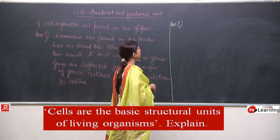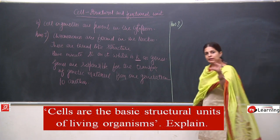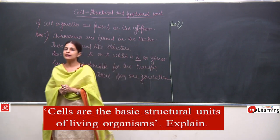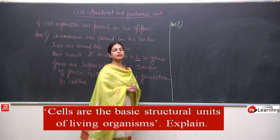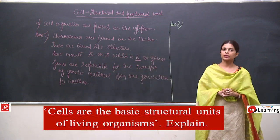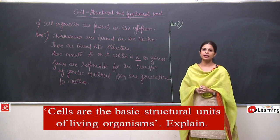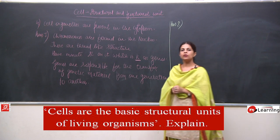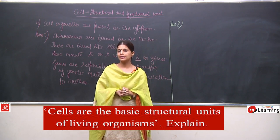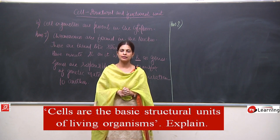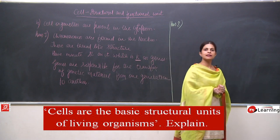Cells are the basic structure because they are the minute structures that contain all cell organelles, and these cell organelles are responsible for definite and specific work. For example, how does growth take place? Because the cells divide — the number of cells increases. When you grow, your hands, legs, heart, and lungs do not increase in number; it does not mean you will have 4 lungs and 2 hearts. What increases is the number of cells, and thus the body size increases.